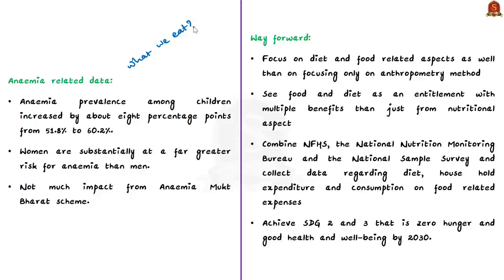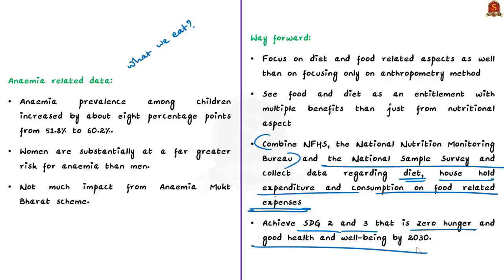What do the authors prescribe? The authors say that we have focused too much on anthropometric measure which do not comprehensively give the picture of malnutrition. The authors opinion that a more holistic data on what India eats is going to help in improving both the diet and food security of our nation. Also, India does not have a dedicated nationally representative survey on the dietary intake and nutritional status of children and adults. We can combine NFHS and the National Nutrition Monitoring Bureau and also the National Sample Survey. This can comprehensively collect data regarding the diet, household expenditure and also food related expenses. Addressing the issue of malnutrition from multiple friends with special focus on the lower socio-economic groups will lead to faster decline of the malnourishment. This will also help us achieve the sustainable development goal 2 and 3 which are zero hunger and good health and well-being by 2030.